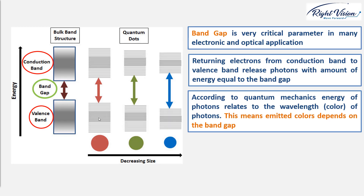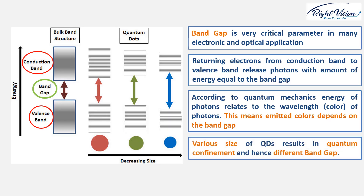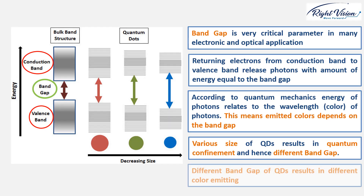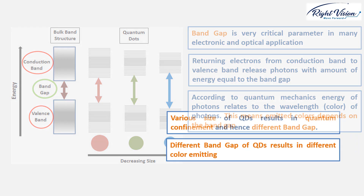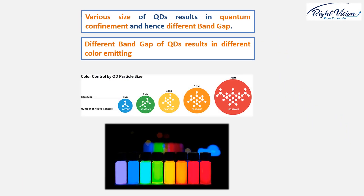Different sizes of quantum dots have different band gap sizes. Once light hits them, electrons jump to higher energy sets and then come back to lower energy sets, releasing different amounts of energy — implying different wavelengths and different colors. The smaller the quantum dot, the larger the band gap, the more energy released, the higher the frequency, and we get a more bluish color.